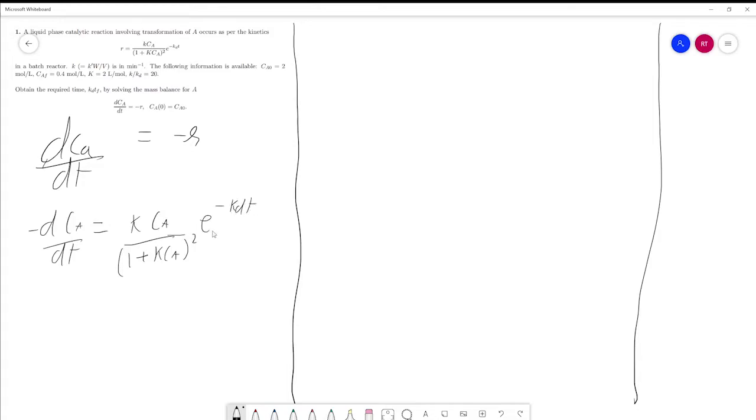What we know is that K can be replaced with 2. So minus dCa by dT equals KCa times 1 plus 2Ca whole squared.